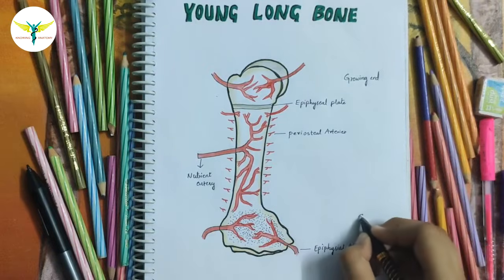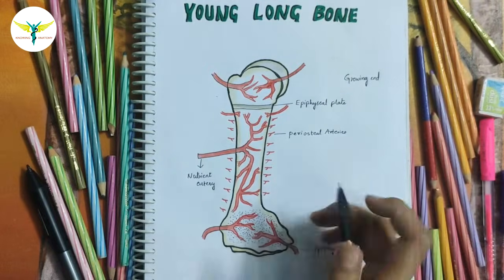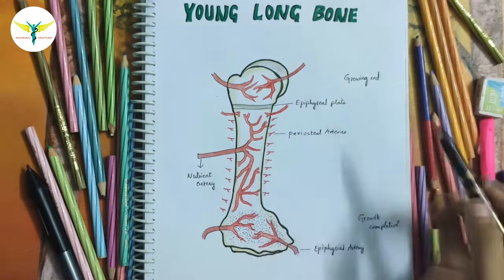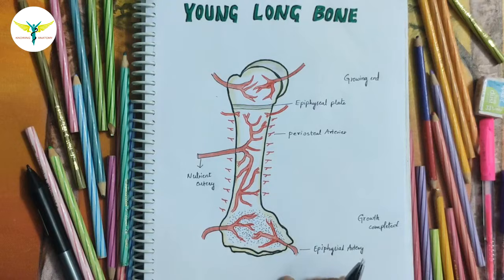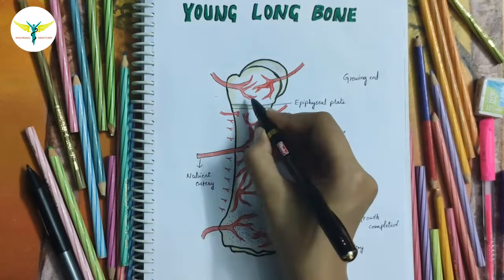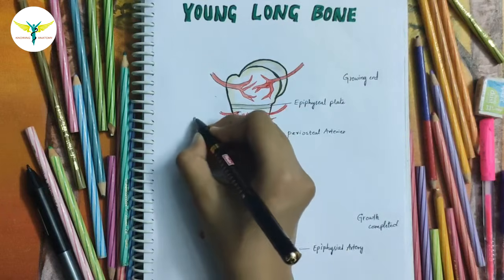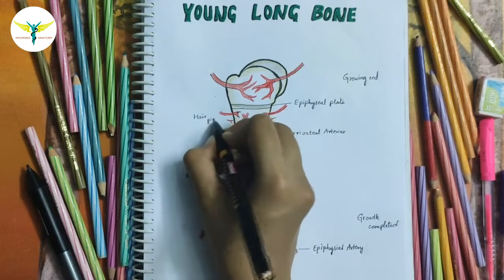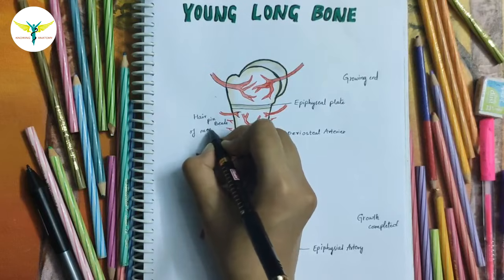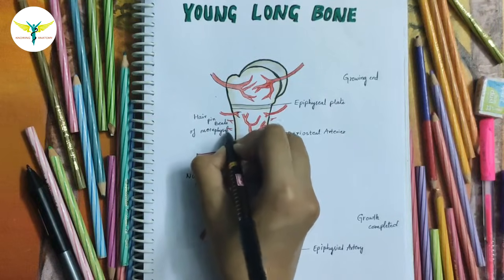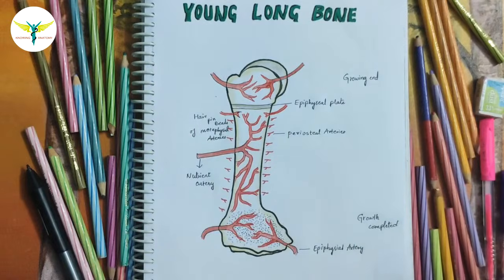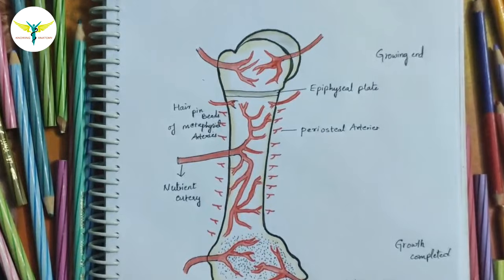Where there is no epiphyseal plate of cartilage, growth is completed. These are the periosteal arteries around the metaphysis. These are the epiphyseal arteries present in the epiphysis of the bone. This is the main artery called the nutrient artery. These are small bends called hairpin bends of metaphyseal arteries, present before epiphyseal fusion.